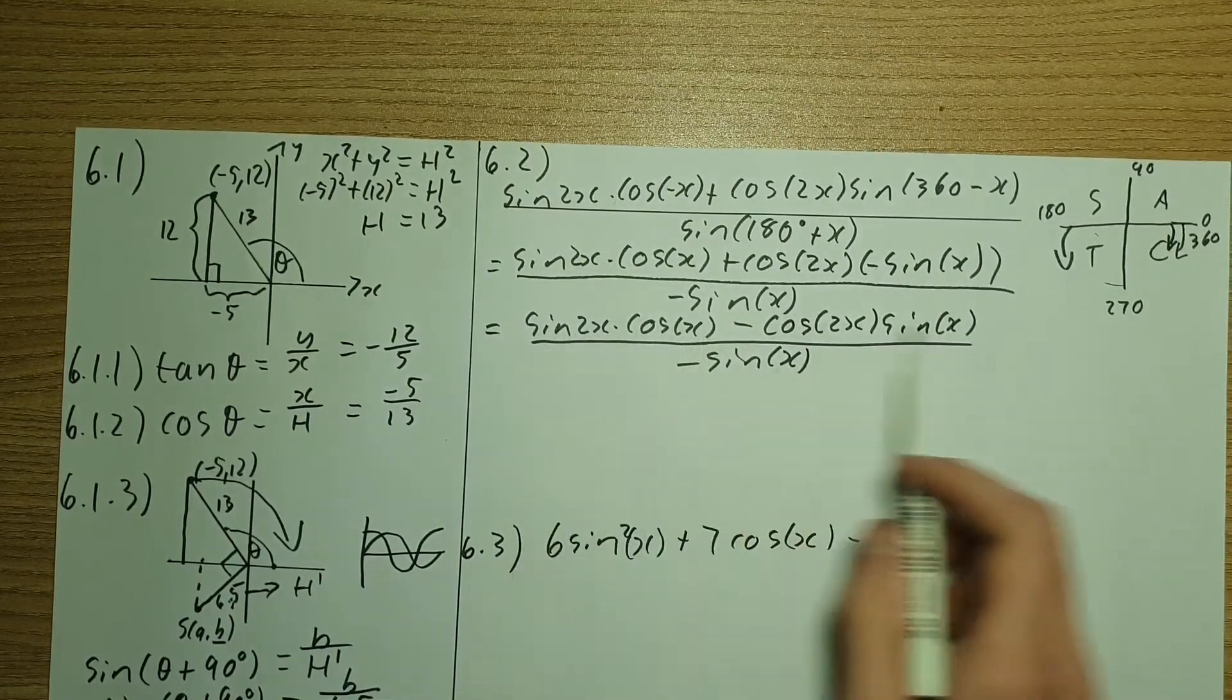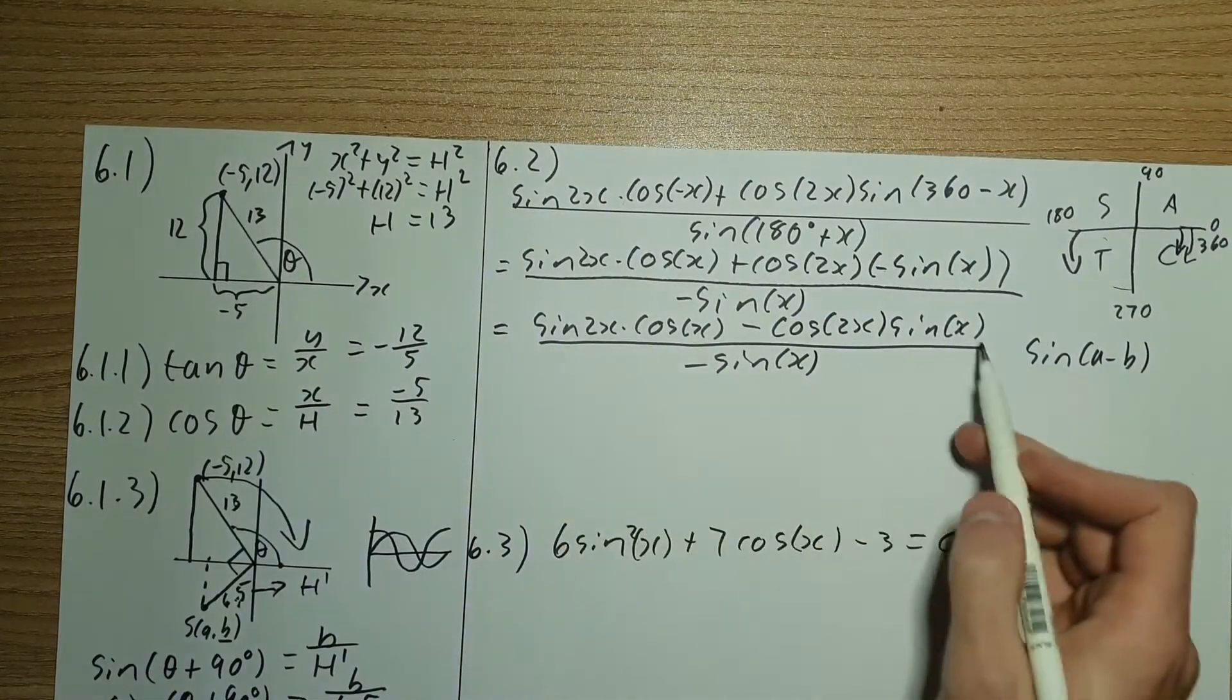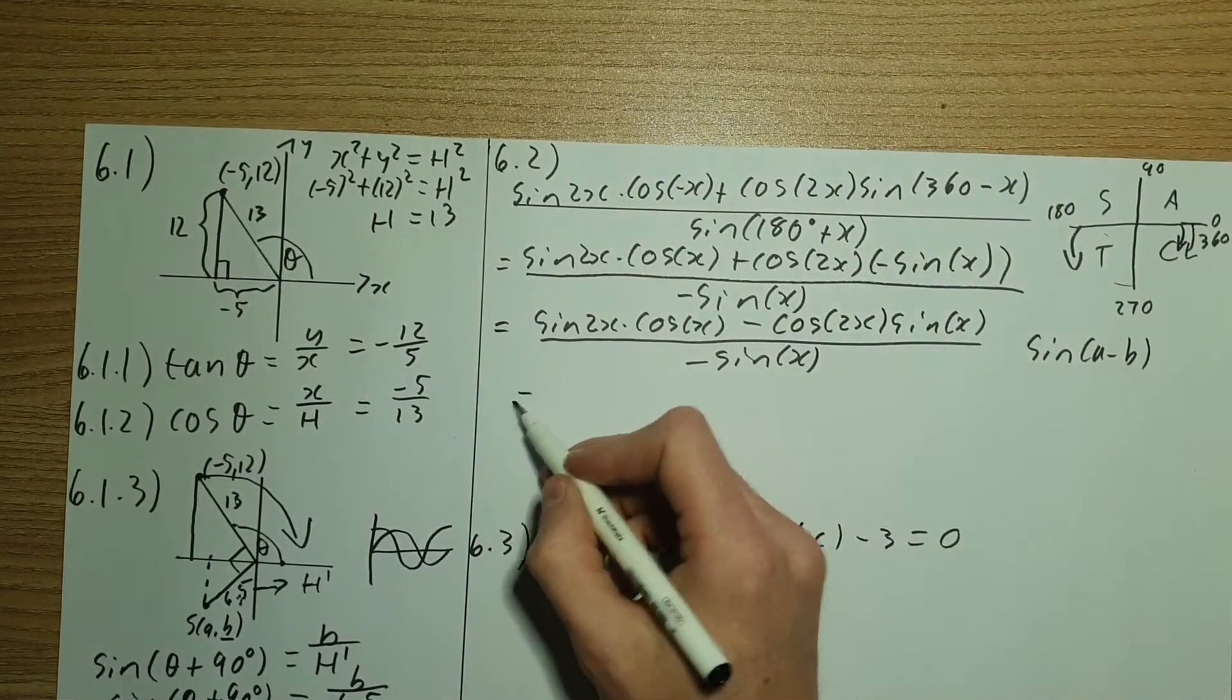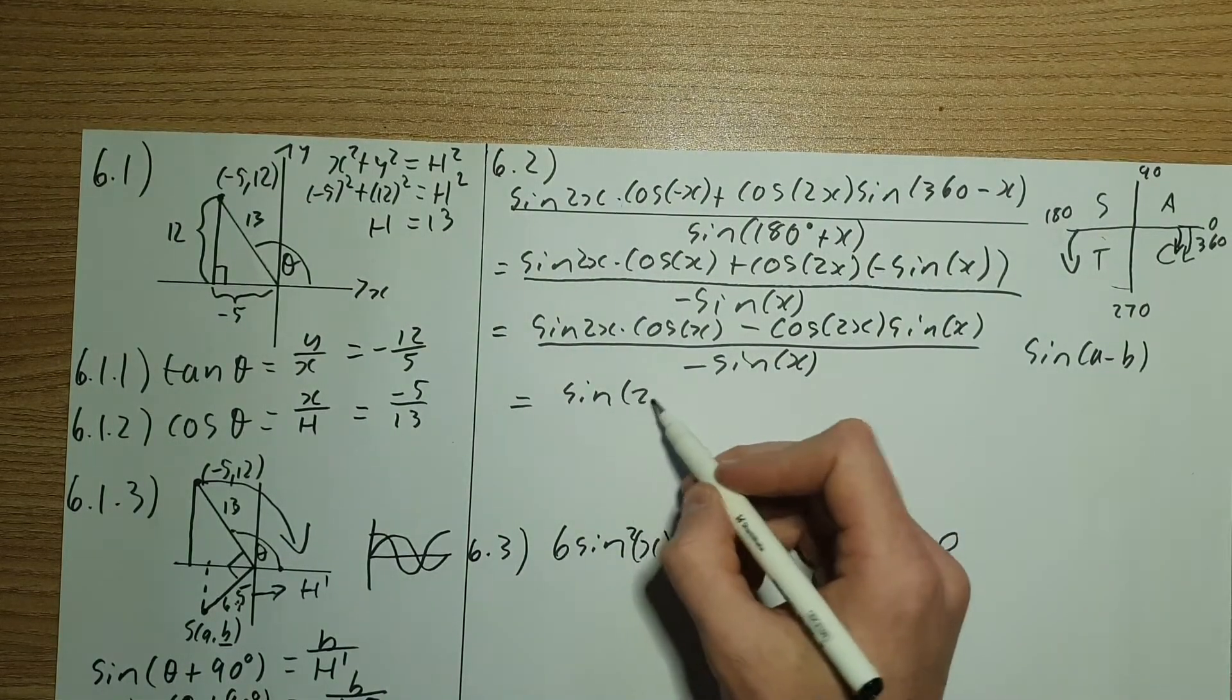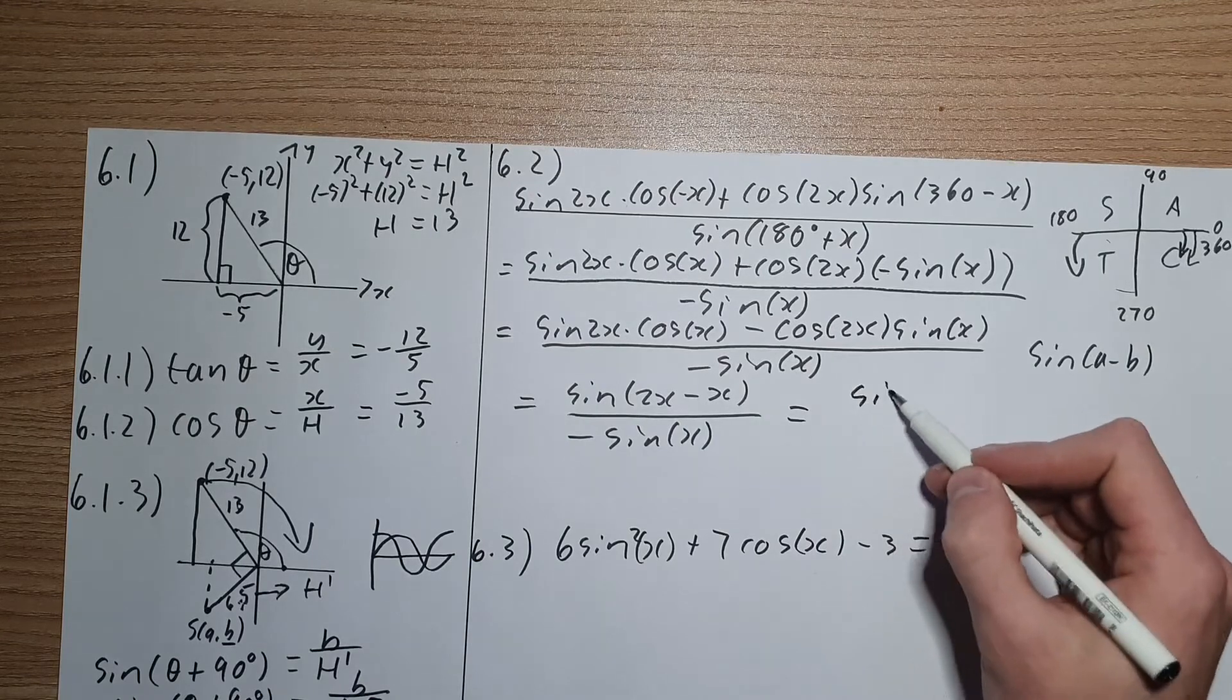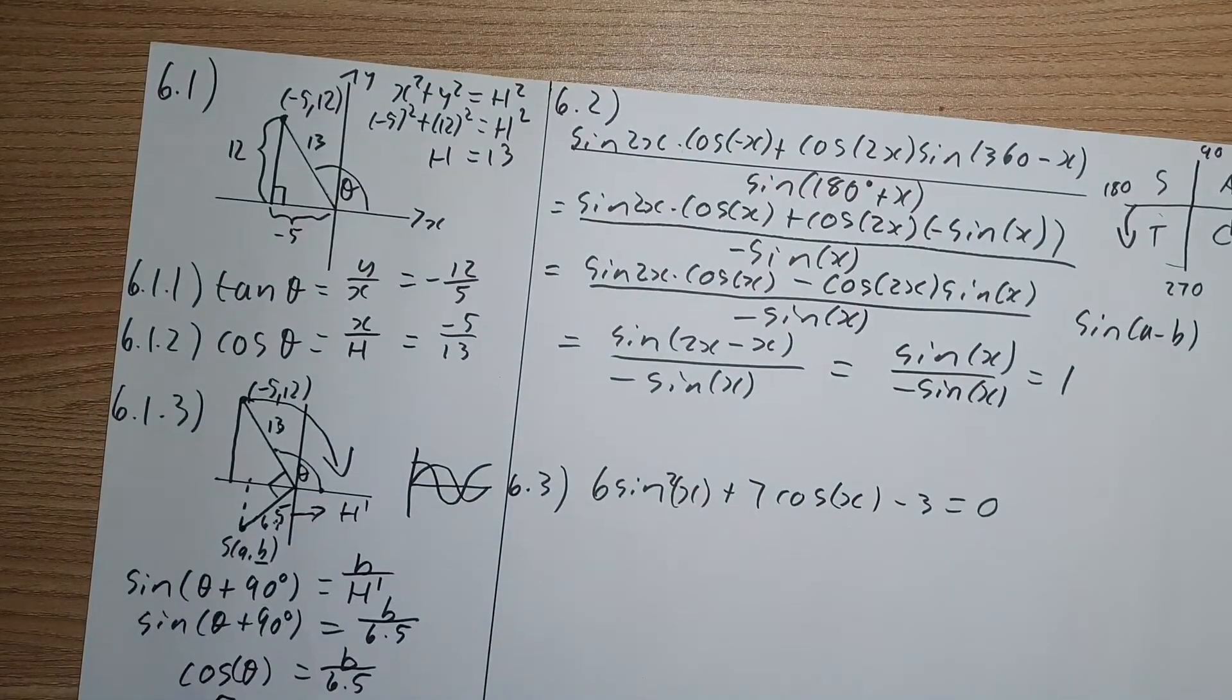And if we sort out the bottom, sin of 180 degrees plus x means we are now going to be sitting over here and we're moving down into that quadrant, which means sin is negative here. So we have negative sin of x. Now we can sort out the negative here. So it's going to then be sin of 2x cos x minus cos 2x sin x, all over negative sin of x. Now you should notice that this here is a double angle. We're using sin a minus b. So this here is going to reduce, the top is going to reduce down to sin of a minus b. In this case, a is 2x and b is x. So we're going to have sin of 2x minus x all over negative sin of x, which is then equivalent to sin of x over minus sin of x, which equals to 1.